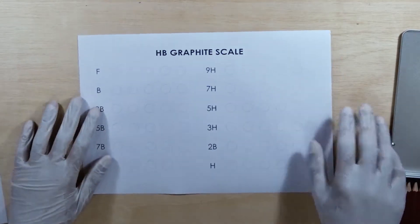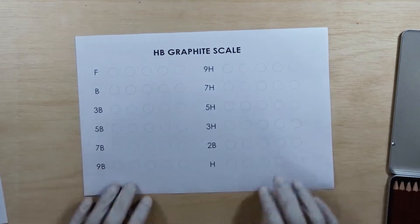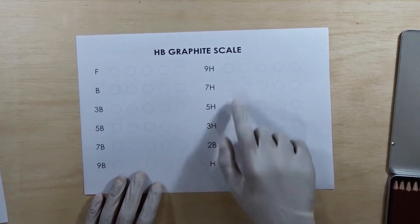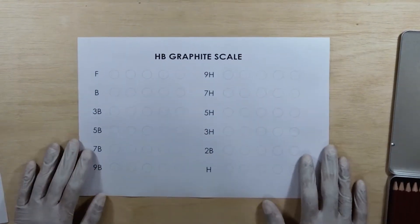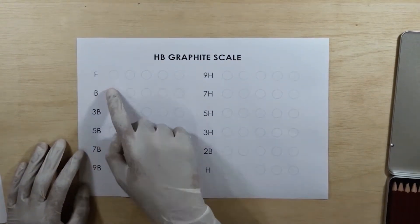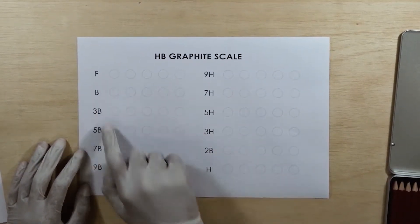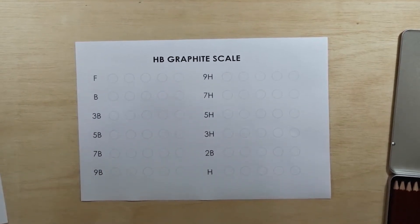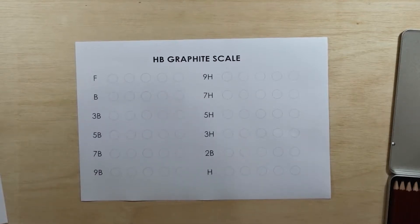Okay people, so we have our first document here. It's called HB Graphite Scale. In this document we have five slots for F pencil, then five slots for B pencil, and we have five slots for different pencils. I'm skipping a few because we don't need them. It's a grade you need to understand.